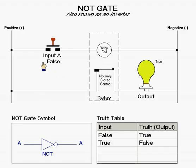When you have an input of false, the relay coil is de-energized and the relay contact closes. As you can see, power then flows through the relay contact, energizing the light bulb, representing the output of true.